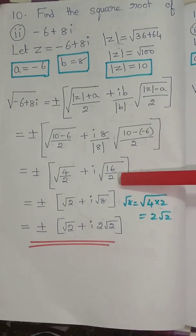Exercise 2.5, 10th question, third subdivision: find the square root of minus 5 minus 12i. So z equals minus 5 minus 12i. Modulus of z: square root of real number squared, 25, plus imaginary number squared — 12 squared is 144. Adding: 25 plus 144 is 169. Square root of 169 is 13. So a is minus 5 and b is minus 12.